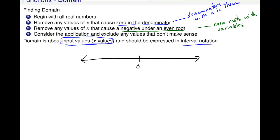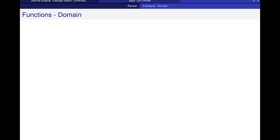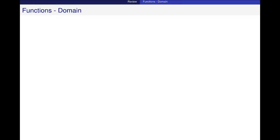So let's look at a couple examples for domain. I want to find the domain of f of x equals x squared plus 5 divided by x plus 2. Now I have these three things that I'm checking for. I start with all real numbers. The first thing I check for is, are there any denominators where x could cause a 0?